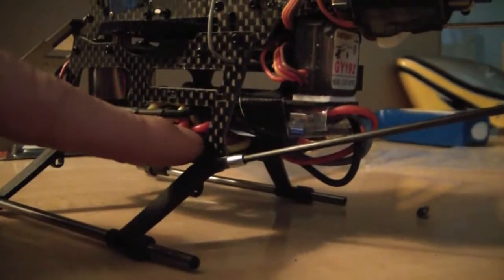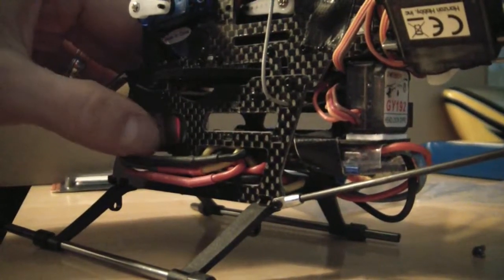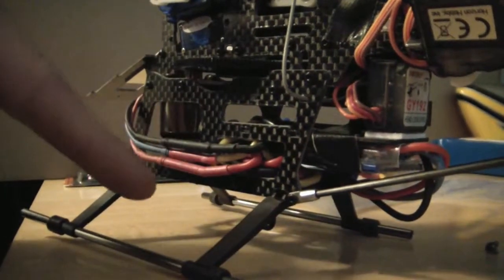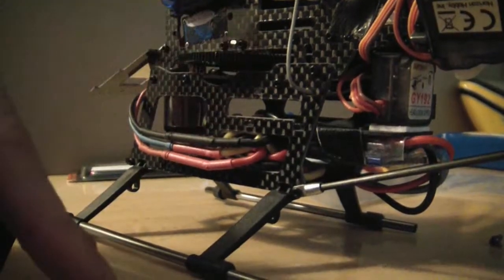I got the E-Flight 25 Amp ESC down in here and the Align 250 motor, which is a 3,400 kV motor meant to be run on a 2 or 3 cell. I'll be running it on a 3 cell, and it actually only needs a 15 Amp ESC, but I used a 25 just because that's what I had.